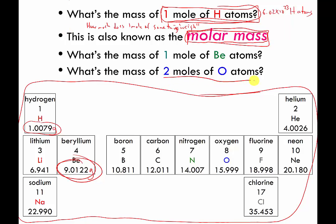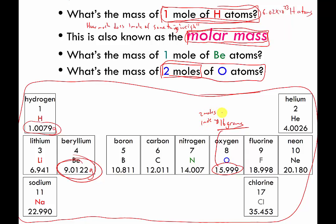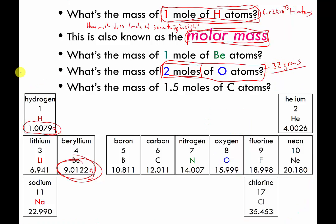What's the mass of two moles of oxygen? This is not asking for the molar mass of oxygen — the molar mass of oxygen is about 16 grams. But I want to know how much two moles of oxygen weighs. One mole weighs about 16 grams, so two moles must weigh about twice as much. Twice 16 is 32, so the answer is 32 grams.